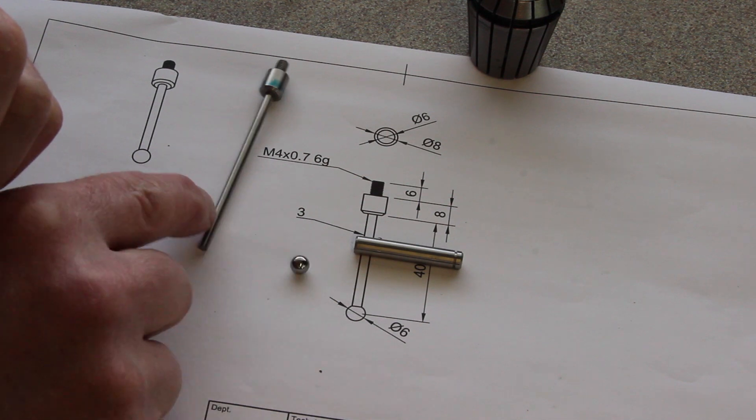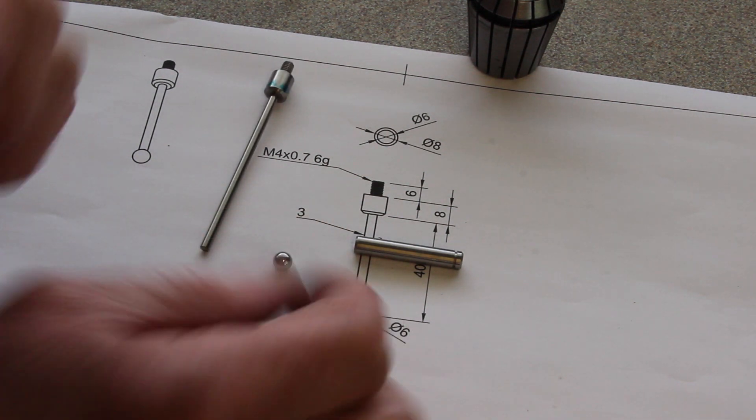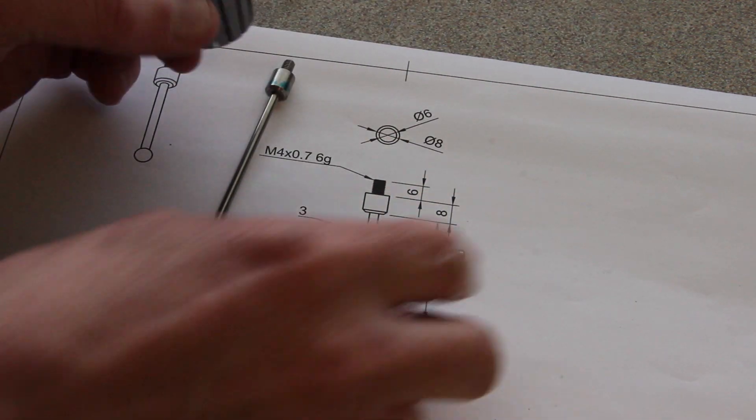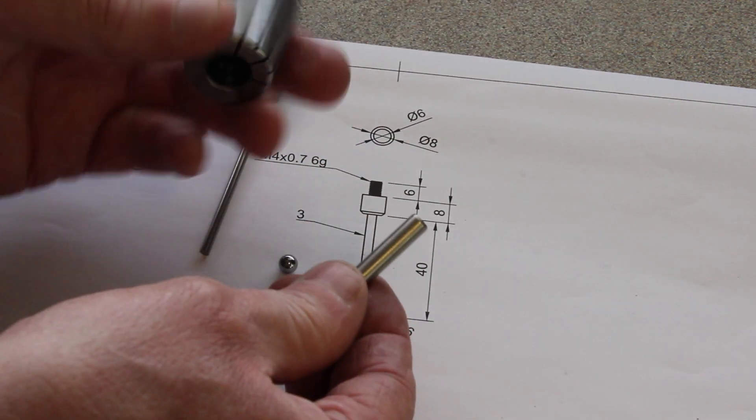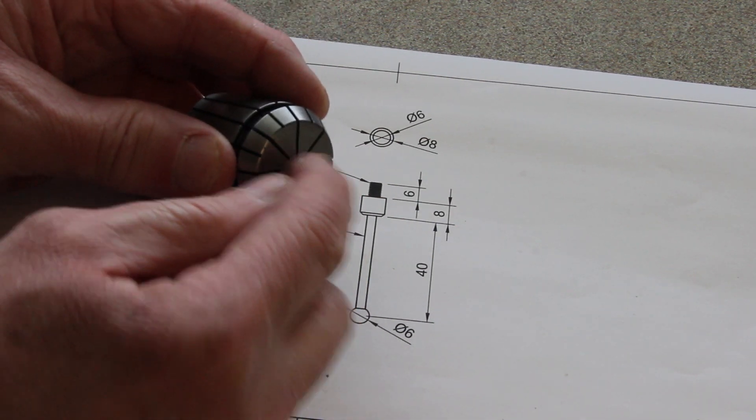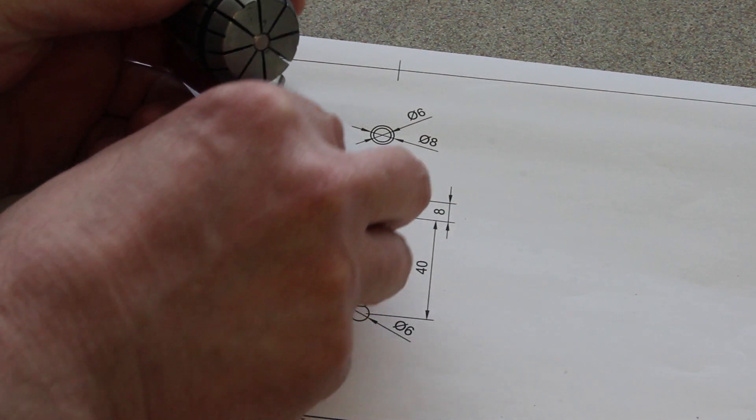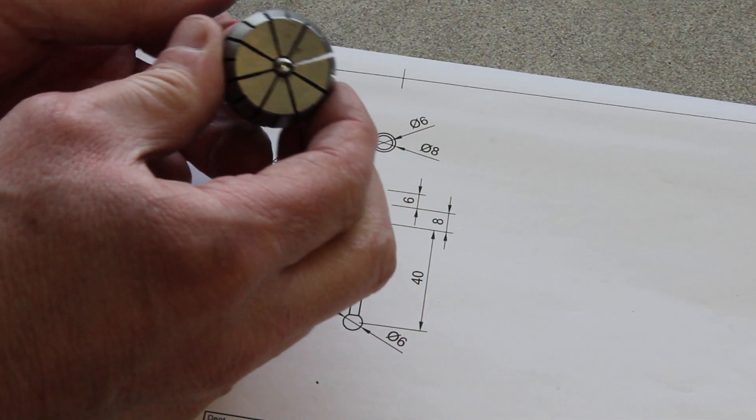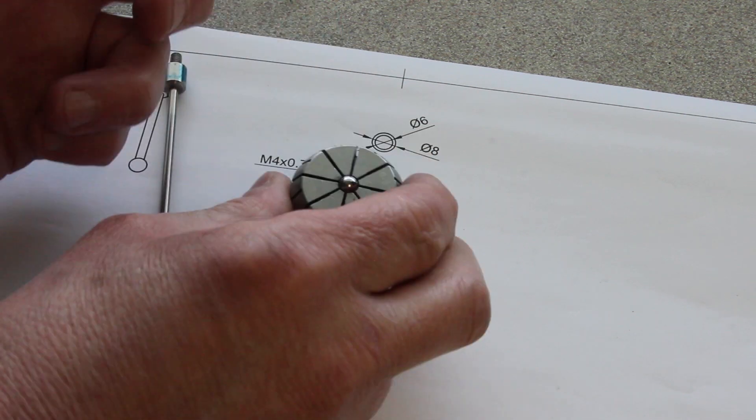So this is where we are. There's the embryo touch probe and I need a ball on this end. This is how I've come up with doing it - I'm absolutely not sure whether this is going to work, but this rod is six millimeters in diameter so that fits nicely in the collet.